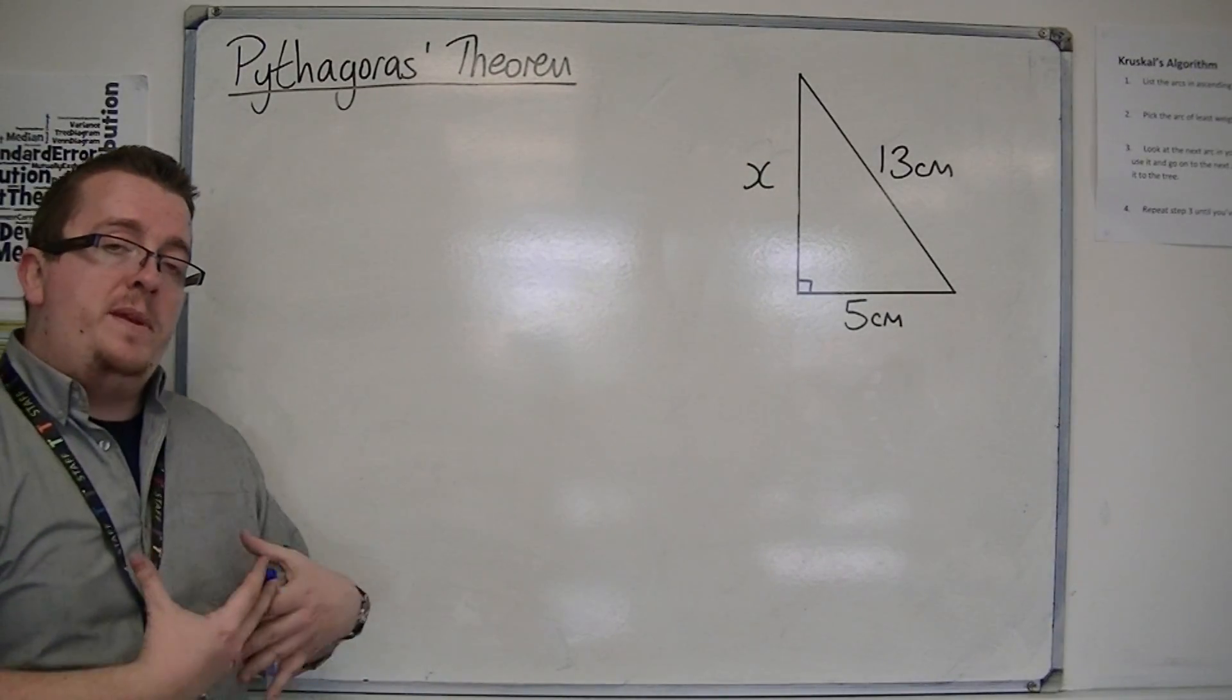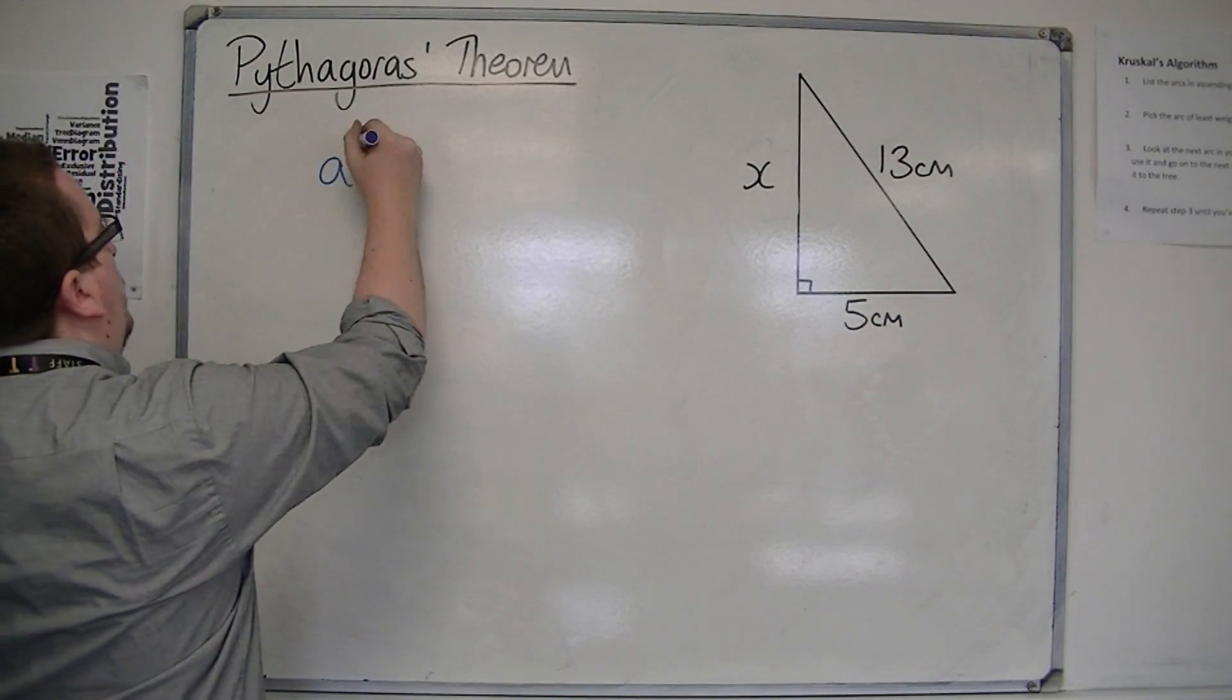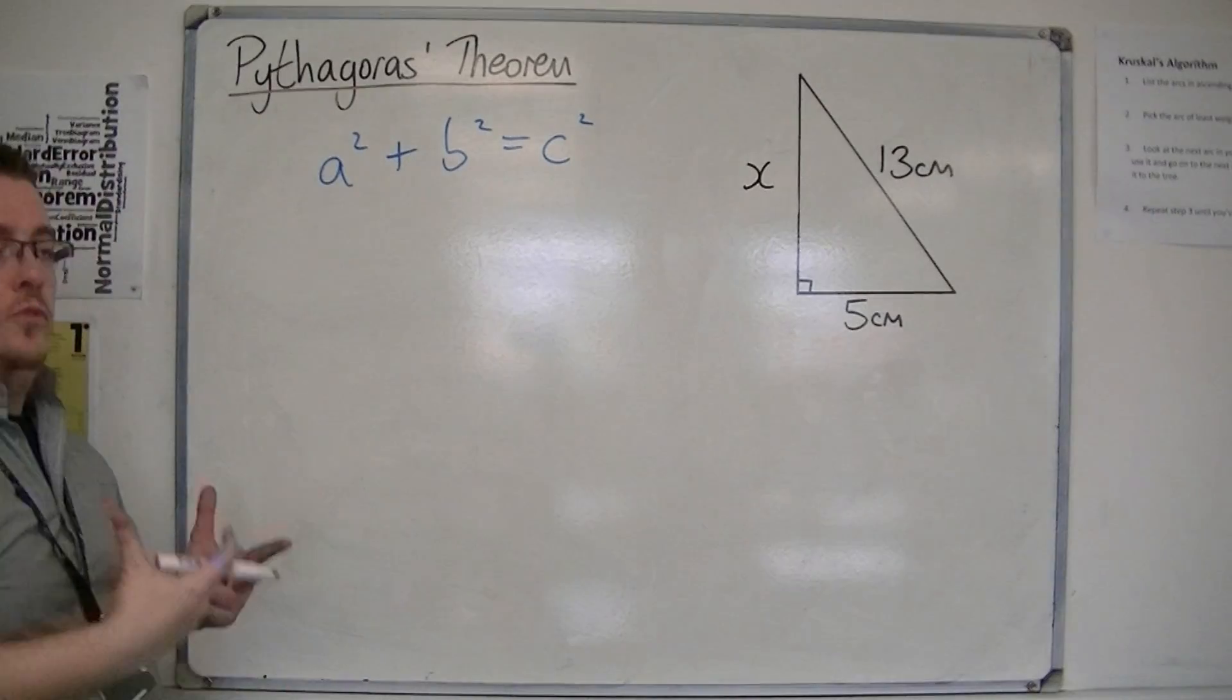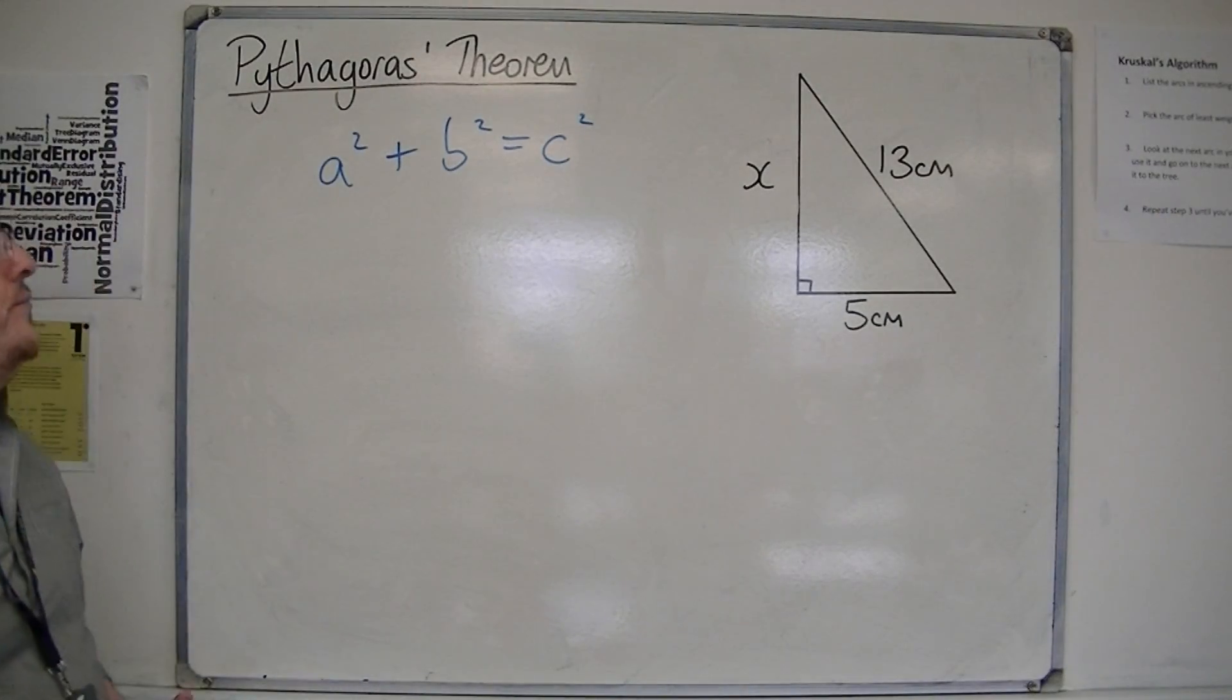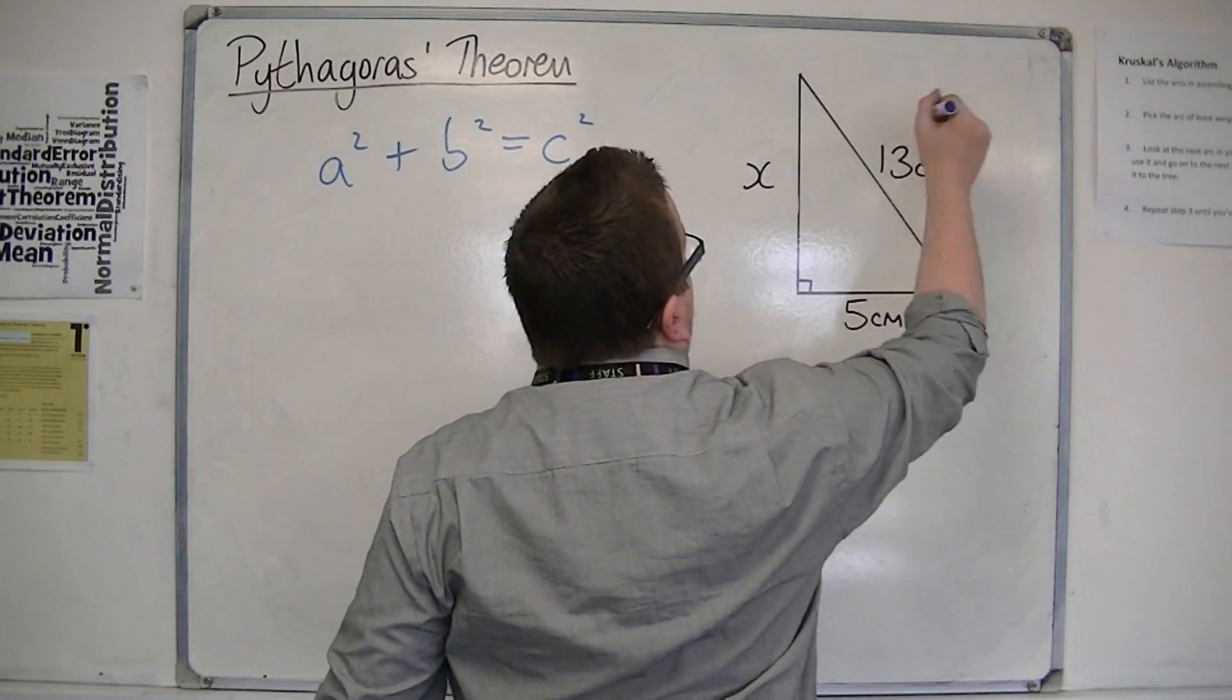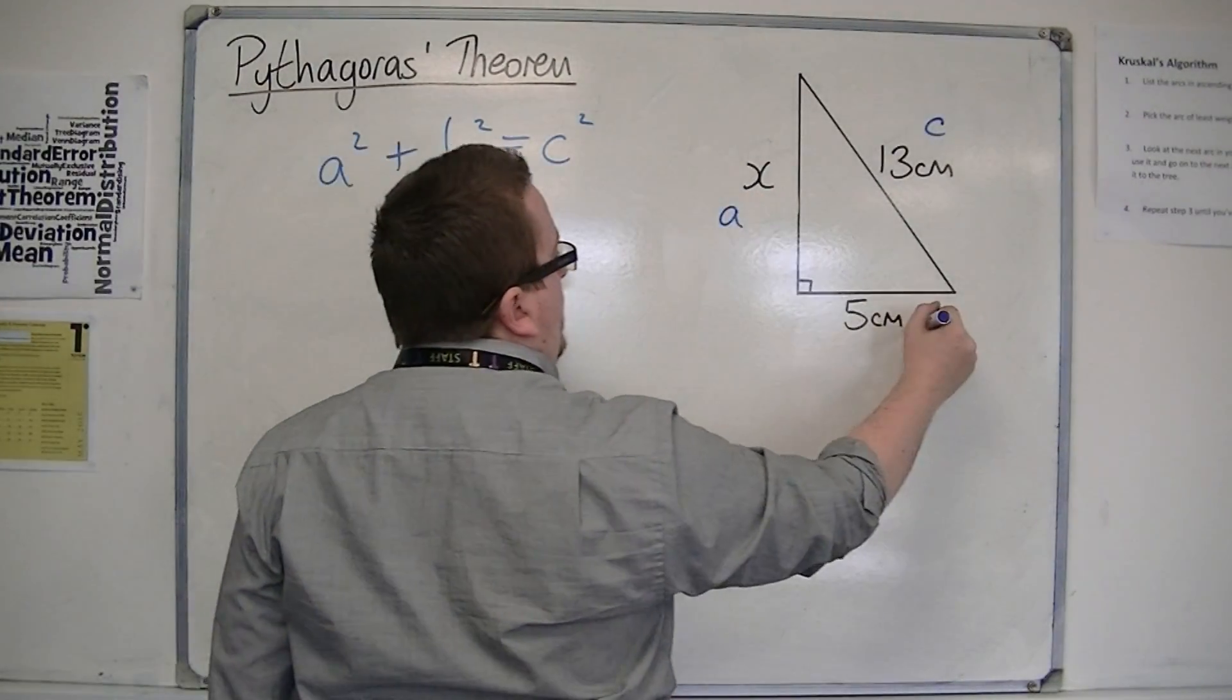But it's still going to be using Pythagoras' theorem, so we write that down first. a squared plus b squared equals c squared. And we label the triangle accordingly. We label the c first, remember, so c is the label for the hypotenuse. And the a and the b are the other two sides.